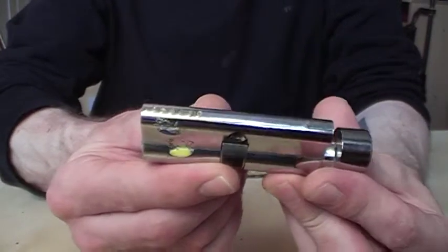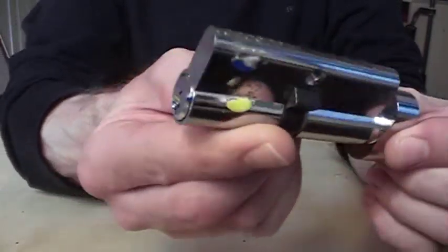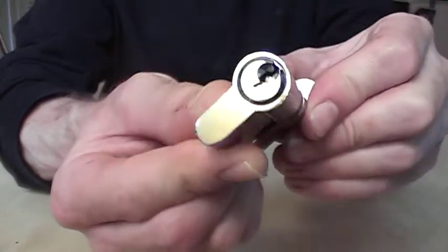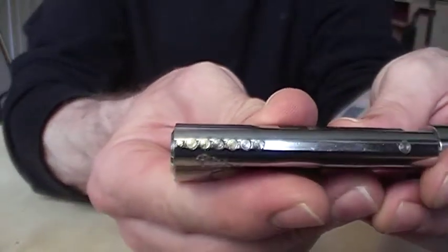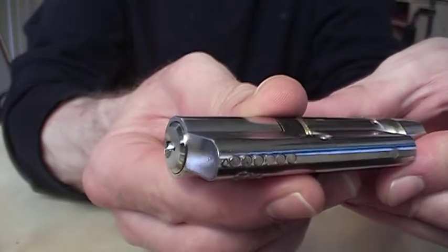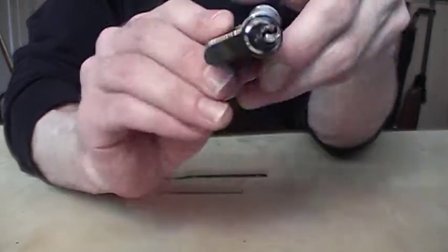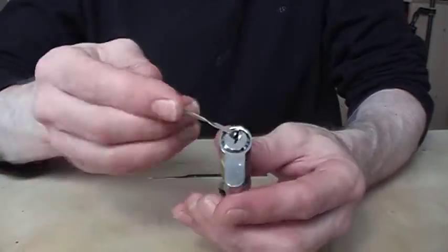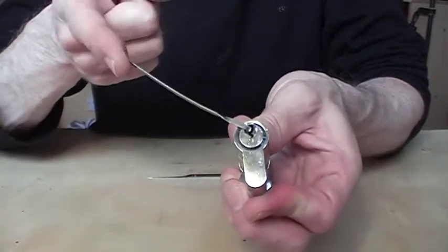Today I've got the Thumbturn Euro Cylinder, 6 pin, unbranded. Doesn't necessarily mean it's easy, but it is pickable and it does work. It is locked there, as you can see.